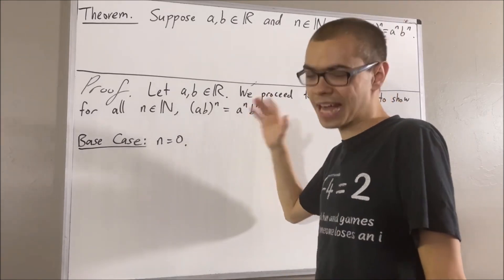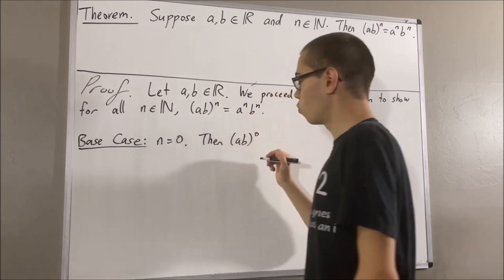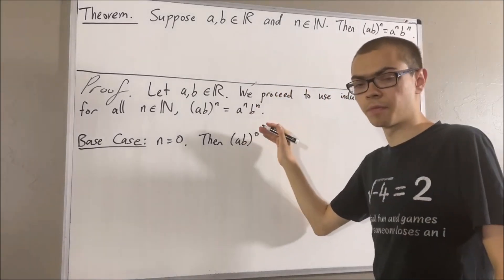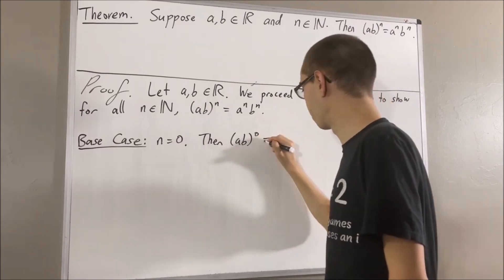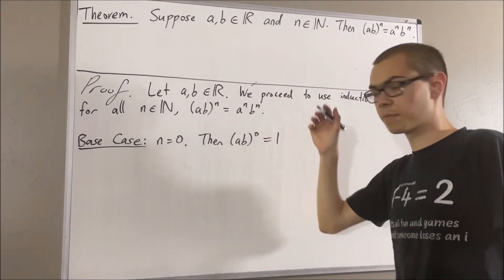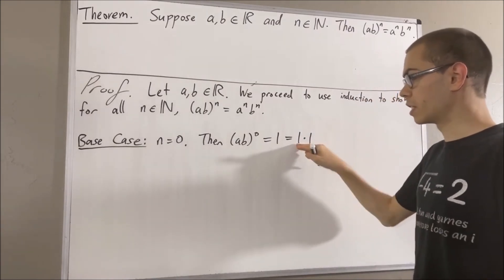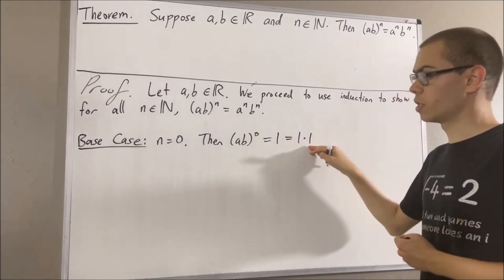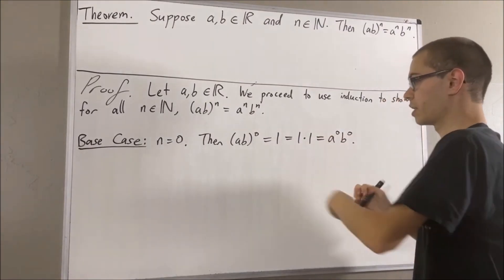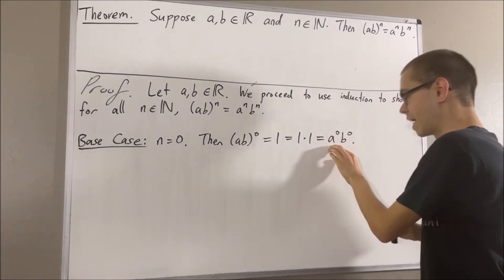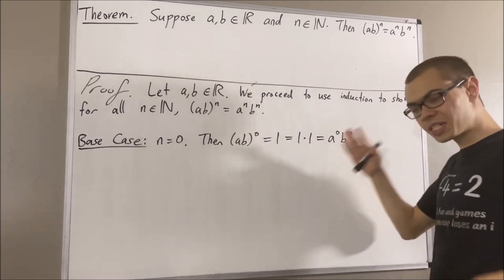Let me start by writing AB to the power of zero. Now we know that any real number to the power of zero is equal to one, so AB to the power of zero is equal to one. And one is equal to one times one. We know that 1 is equal to A to the power of 0, and 1 is equal to B to the power of 0. So we have shown that AB to the power of 0 is equal to A to the power of 0 times B to the power of 0. This completes the base case.